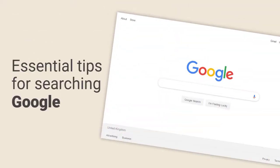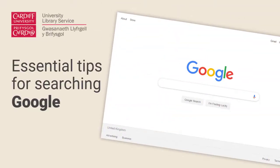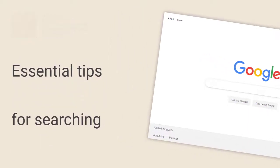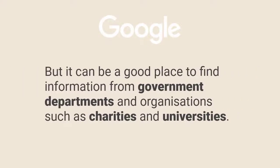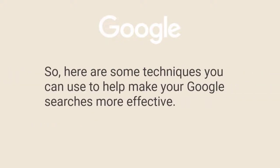In this video we're going to be sharing our top tips on searching Google for sources for your academic work. Whilst Google isn't the best place to look for academic sources, it can be a good place to find information from government departments and organisations such as charities and universities. So here are some tips to help you get the best out of Google.